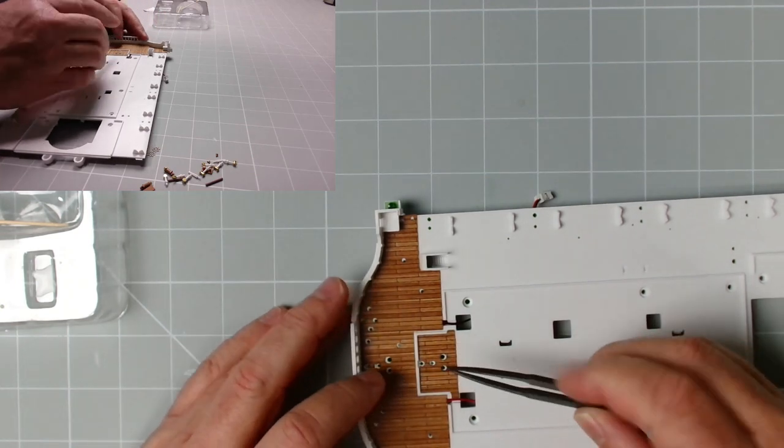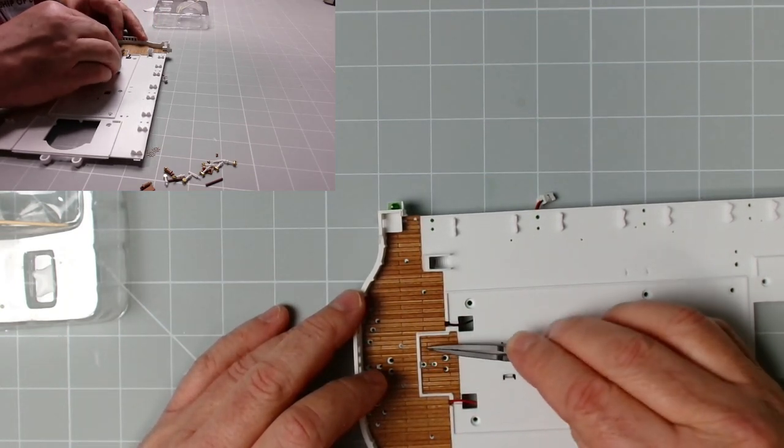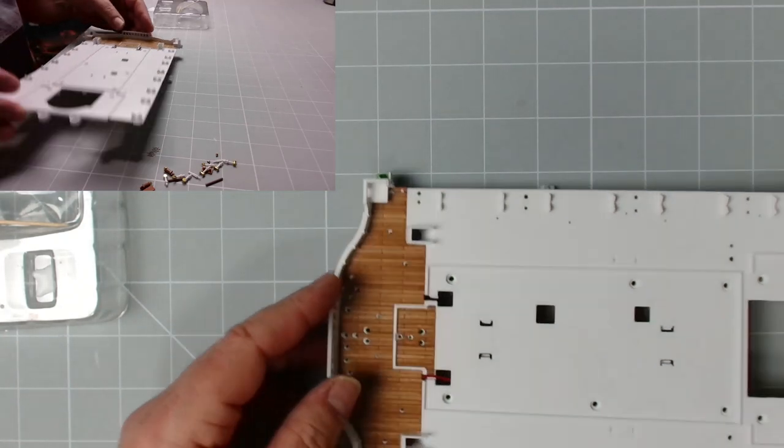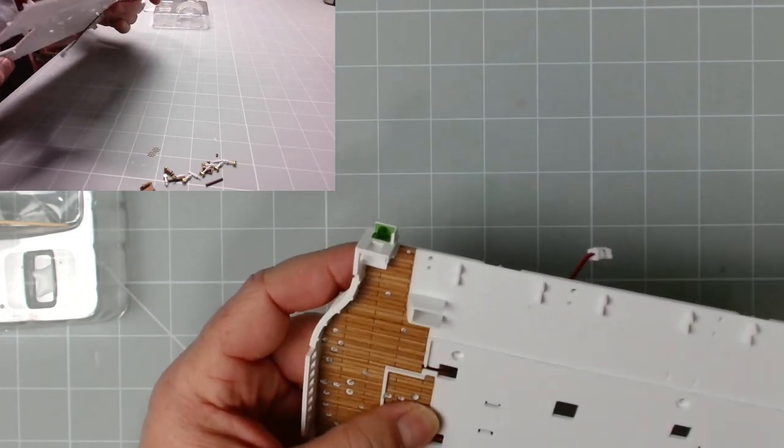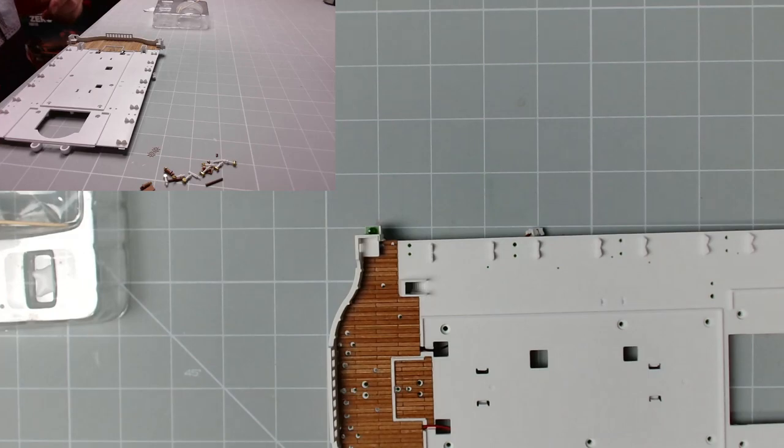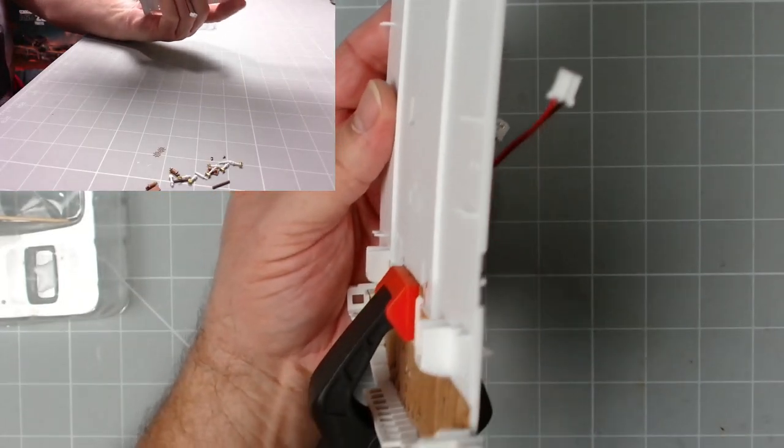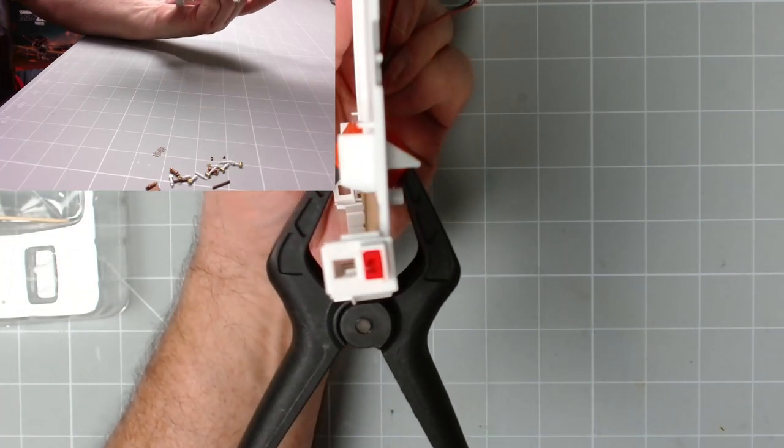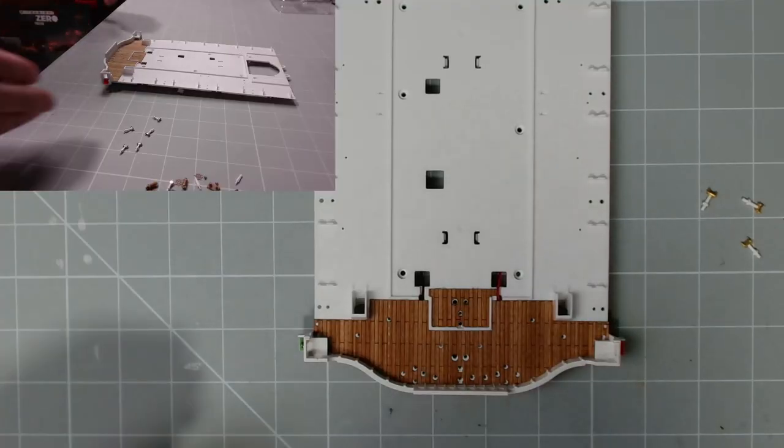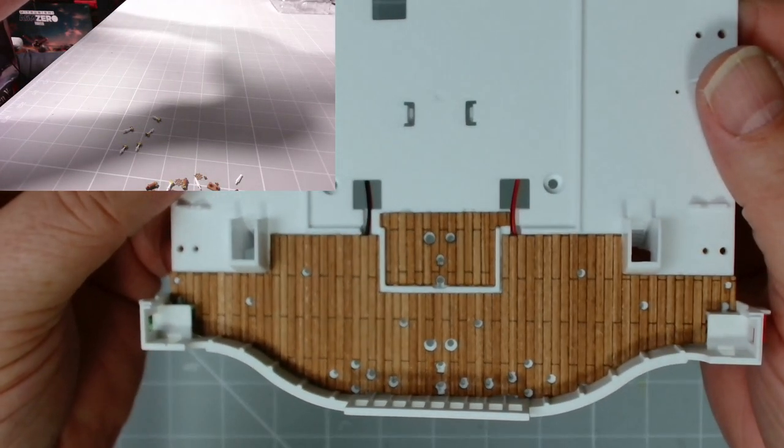That should be enough for that. Then we just need to pop this in place, line up the holes. There we go, snugly in place. Excellent. You could put a clamp on that for a short time if you want to. There we go, perfect size and it's not interfering with any of those. Leave that for five minutes. There we go folks, that's nicely in place now. Excellent stuff.